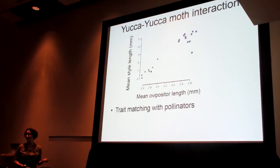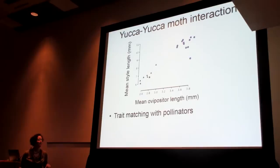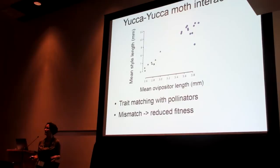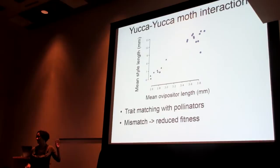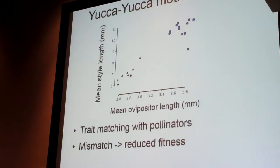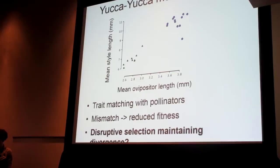This pattern is found not just comparing across species but within species as well. Each dot in this graph is a single population — brevifolia in green triangles and jaegeriana on the right — showing variation across populations but maintenance of this correlation between traits. This suggests that a mismatch in moth body size and style length results in reduced fitness for one or both partners in the mutualism. Now the moth pollinators are completely reproductively isolated, but the Joshua trees are not. So we think disruptive selection on style length could be contributing to divergence in these two Joshua tree species.